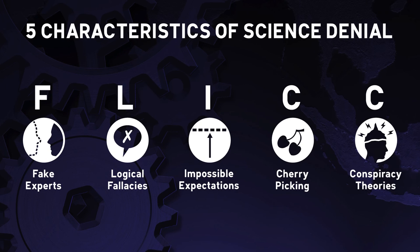A useful framework for explaining the fallacies commonly seen in climate misinformation is the five characteristics of science denial, summarised with the acronym FLICC. This stands for fake experts, logical fallacies, impossible expectations, cherry picking, and conspiracy theories.